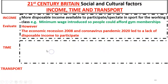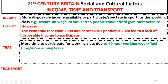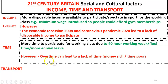Regarding time, there is more time for the working class to participate — a 38-to-40-hour working week, flexi-time, and more annual leave all mean more time to participate. However, we should evaluate this: people often work overtime, which can mean a lack of time — they end up becoming money rich and time poor.